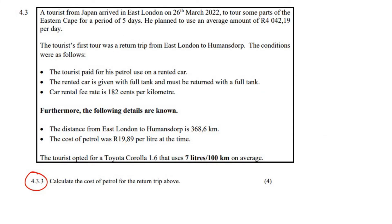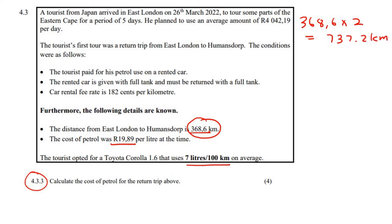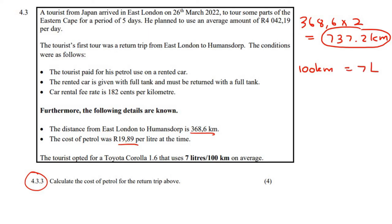Now this question says: calculate the cost of petrol for the return trip. The petrol cost is going to be calculated using the distance, the fuel consumption, and the petrol price. We need to first know how far this person is going to drive: 368.6 multiplied by 2 equals 737.2 kilometers. This particular car uses seven liters for every 100 kilometers.